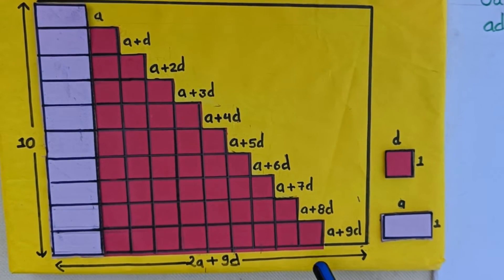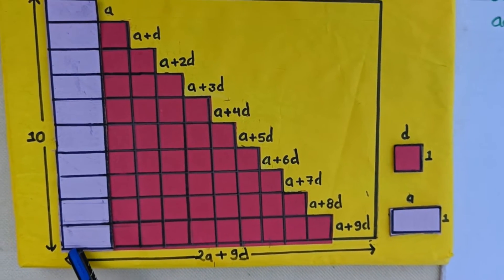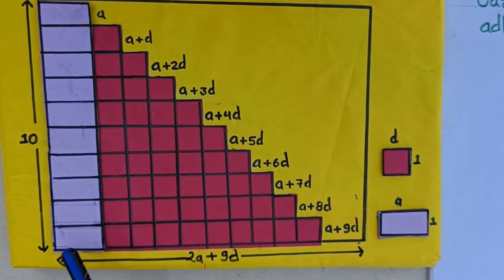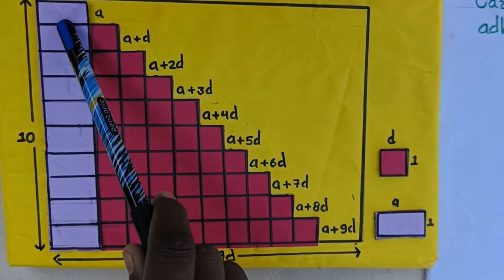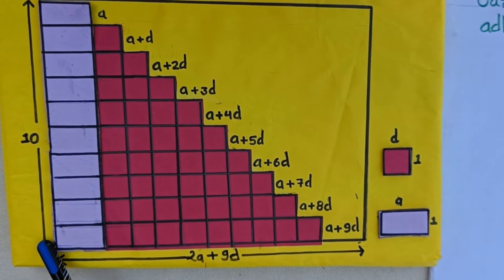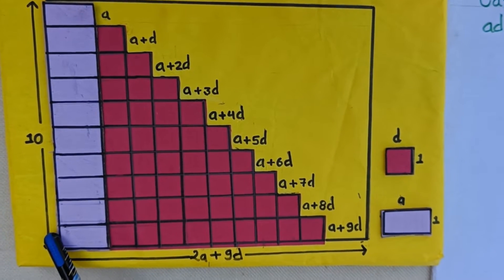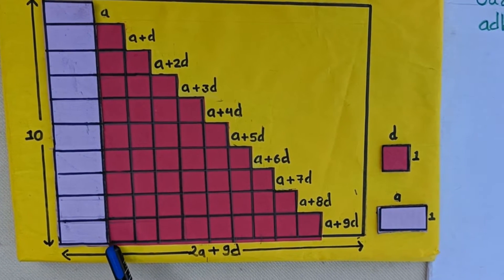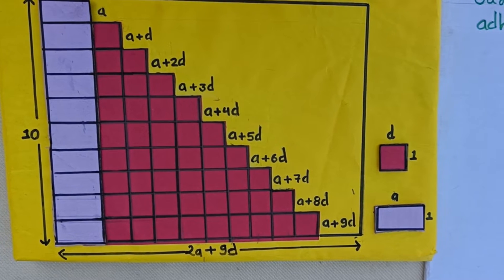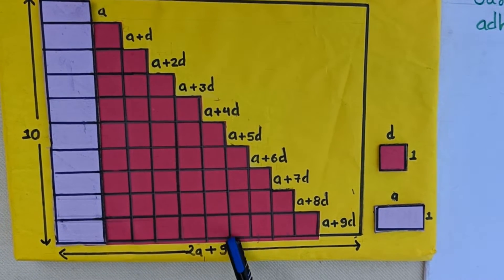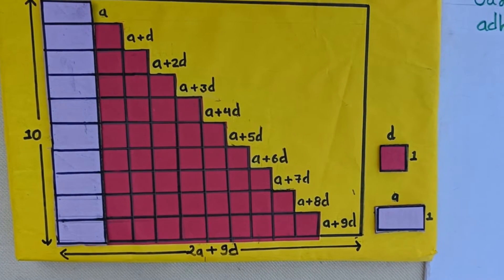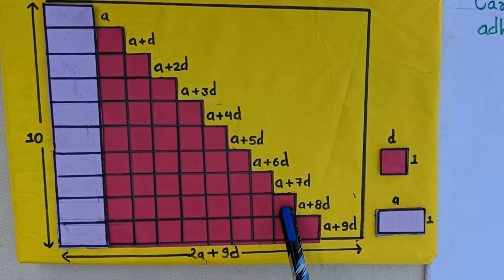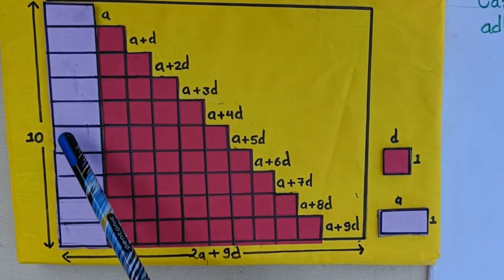We arrange them in such an order so that they form a stair. The purple color rectangles are added in such order that they form a rectangle of length 10 units and breadth a unit. In the first stair there is 1 rectangle and 9 square boxes. Similarly, the second stair has 1 rectangle and 8 square boxes, and so on up to the topmost stair.